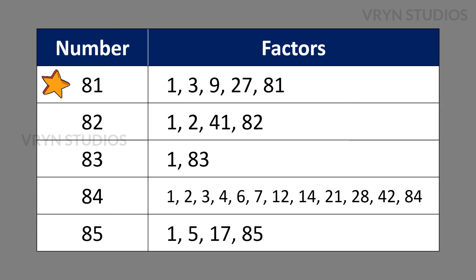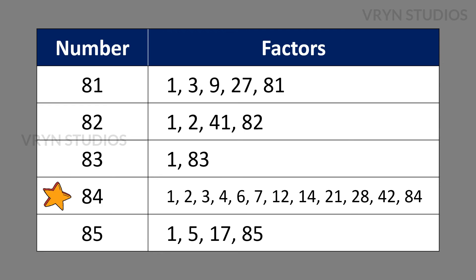The factors for the number 81 is 1, 3, 9, 27 and 81. The factors for the number 82 is 1, 2, 41 and 82. The factors for the number 83 is 1 and 83. The factors for the number 84 is 1, 2, 3, 4, 6, 7, 12, 14, 21, 28, 42 and 84. The factors for the number 85 is 1, 5, 17 and 85.